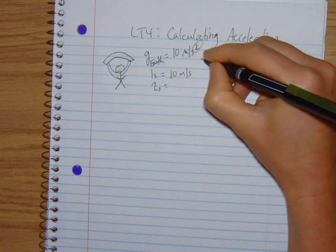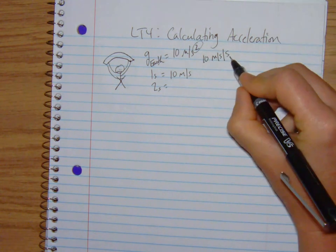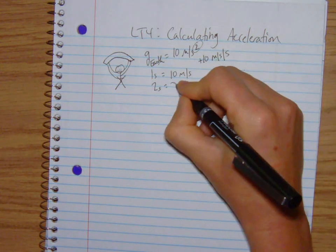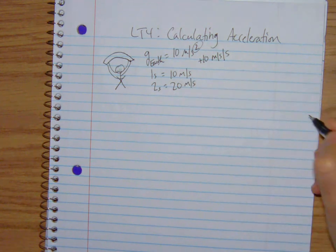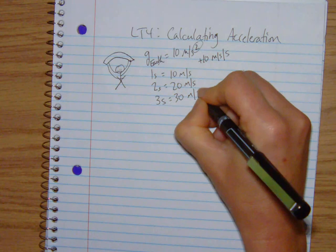So this squared thing means 10 meters per second every second. Every second you fall you go 10 meters per second faster. So you would be falling at 20 meters per second during the second second, the third one 30 meters per second.